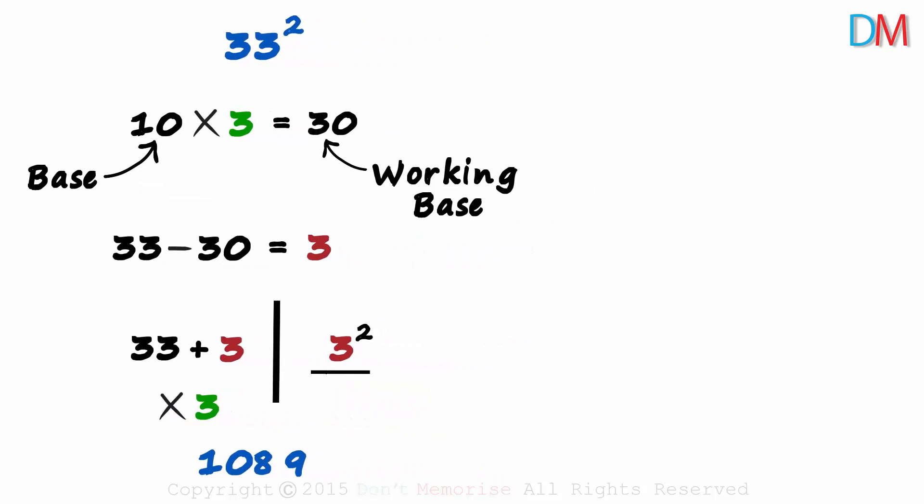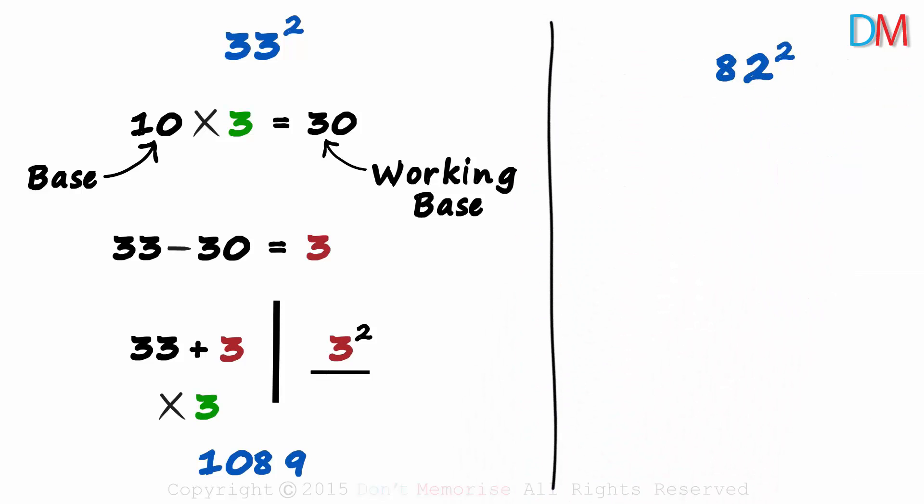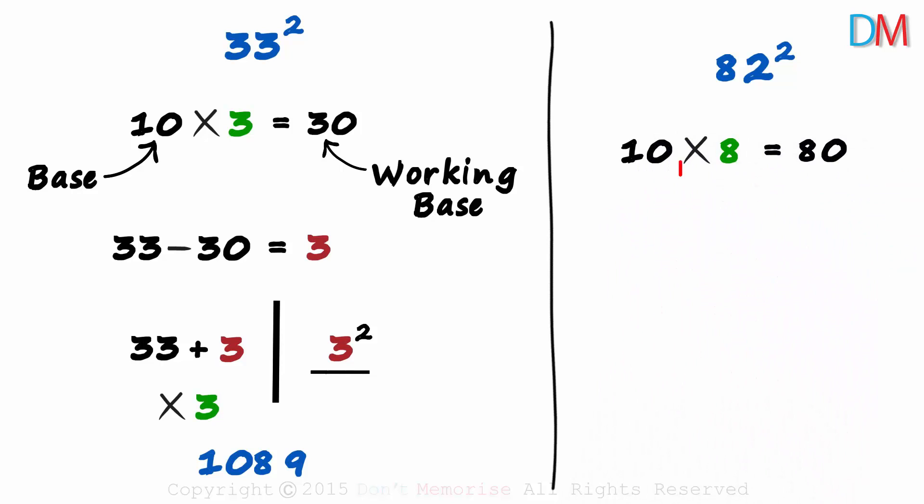Let's look at the next one: 82 squared. 82 is not close to any power of 10. It is close to 80 which is a multiple of a power of 10. We know that 10 times 8 is equal to 80. 10 is the base and 80 is the working base.